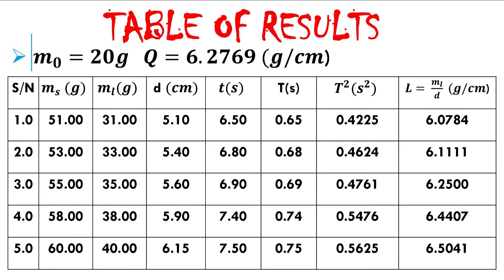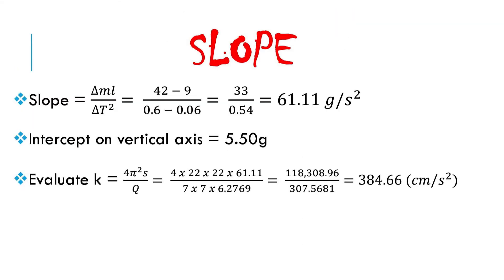We are also asked to evaluate k, which equals 4π²x/q. For q, we deduce it by finding the mean of all values of L from the table — add all five L values together and divide by 5. The mean gives us 6.2769. Substituting into the expression, our answer for k is 384.66 centimeters per second squared.